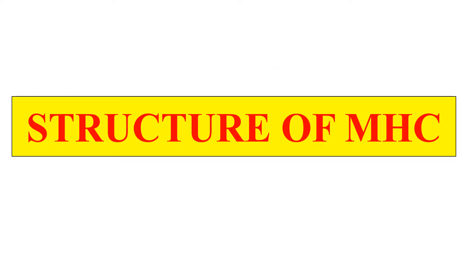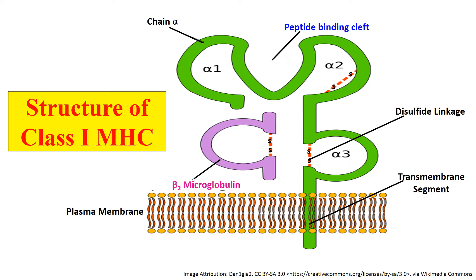Now let's discuss the structure of class 1 and class 2 MHC molecules. The class 1 MHC molecule consists of one polypeptide known as the alpha chain and one small polypeptide known as beta-2 microglobulin. As shown in the figure, the green one represents the alpha chain while the purple one represents the beta-2 microglobulin. The alpha chain has domains denoted as alpha 1, alpha 2, and alpha 3. The region between alpha 1 and alpha 2 forms a cleft-like structure where the antigen binds — this is known as the peptide-binding cleft. The alpha chain has a transmembrane segment that crosses the plasma membrane and reaches into the cytoplasm, but beta-2 microglobulin does not have a transmembrane segment.